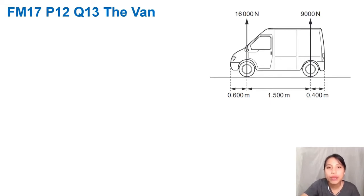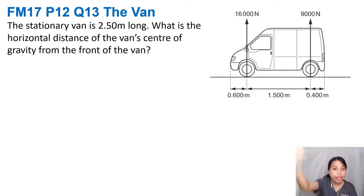Now we look at the van question. What if it's something more complicated? This one, the question is you have a stationary van. Stationary, remember the word stationary. Just now we said the ruler is moving so there is a net torque. Now the van is not. Thankfully the van is not rotating, so it's stationary. Let me highlight that for you.